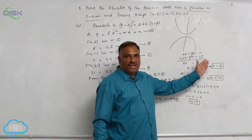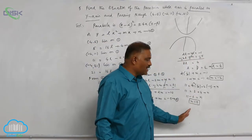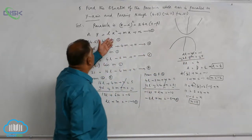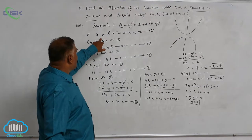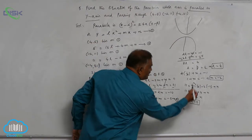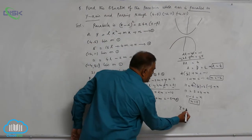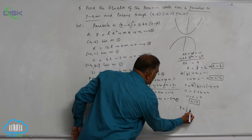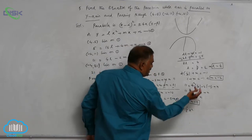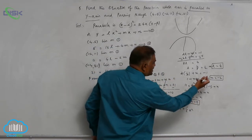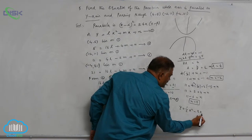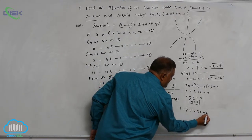After getting the values of L, M, N, you can simply substitute in the first equation. Y is equal to 1 by 2 X square, this is M, M X, Y is M value minus 2, minus 2 X plus 5.